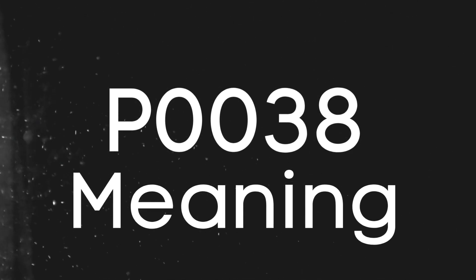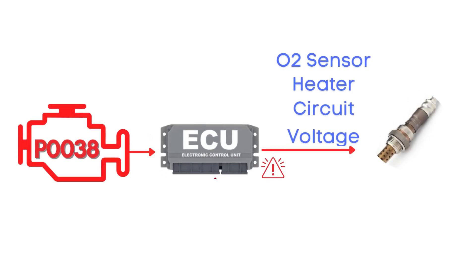First things first, let's break down what the P0038 code actually is. This code gets triggered when the engine control module detects that the voltage in the heater circuit of the oxygen sensor is higher than expected.